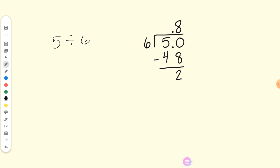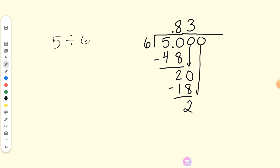Is my answer 0.8 remainder 2? No. I add another zero and drop it down to get 20. How many times does 6 go into 20? 3 times. 3 times 6 is 18. I subtract and get 2 again. I add another zero, drop it down, get 20 again. 6 goes into 20 three times. We get 18, subtract, get 2. What are we noticing? It's a repeating decimal. The answer is 0.83 with the repeating bar over the 3.